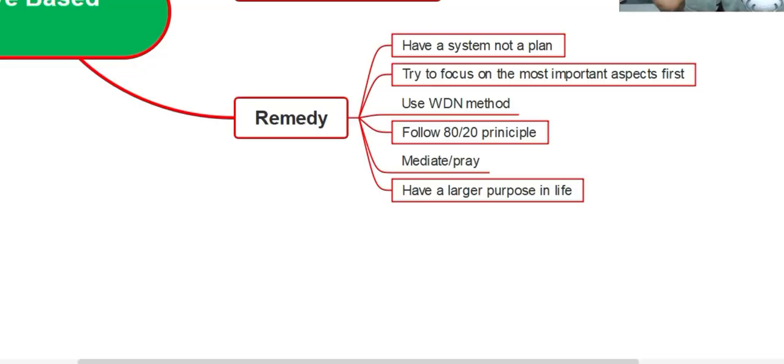Now we move on to the remedy part. Losers and winners both have a plan and a goal, but winners have a system. By system I mean select a particular time to study, study in a particular area, organize your desk properly, organize your mind and be focused, have a goal card. Ultimately having a system will definitely help you.